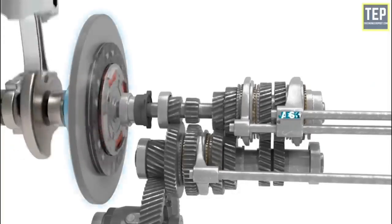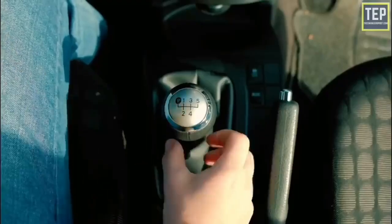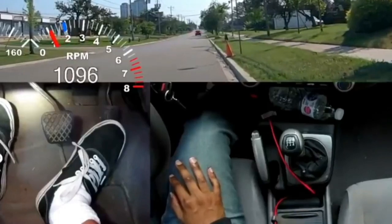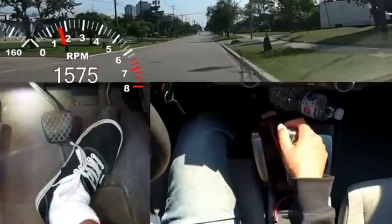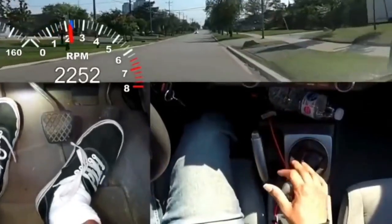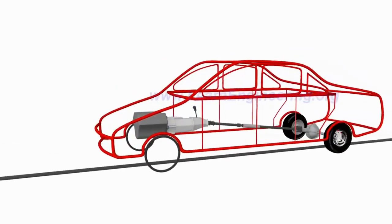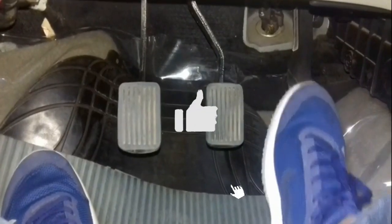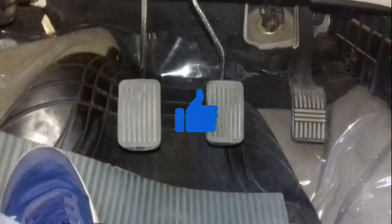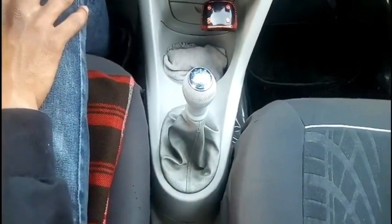Transmissions. In the IC engine, there are different types of transmissions. This is the manual transmission and this is the automatic transmission.